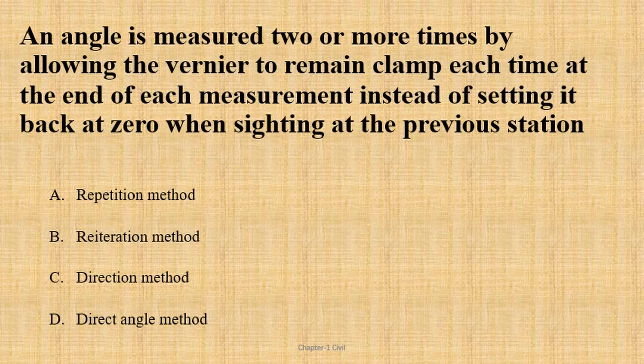This theodolite question is about the surveying subject. An angle is measured two or more times by allowing the vernier to remain clamped each time at the end of each measurement, instead of setting it back to zero when sighting the previous station. The answer is the repetition method — the most accurate method.